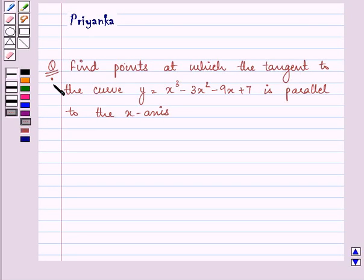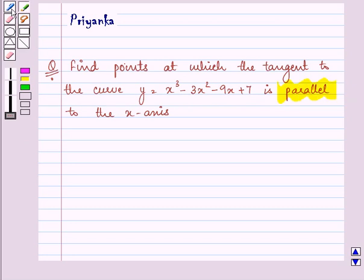Hi and how are you all? The question says, find points at which the tangent to the curve y equals x cubed minus 3x squared minus 9x plus 7 is parallel to the x-axis.